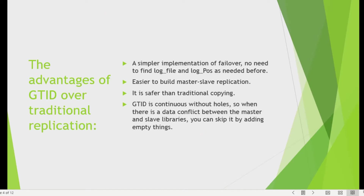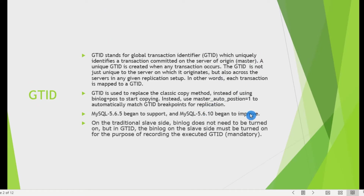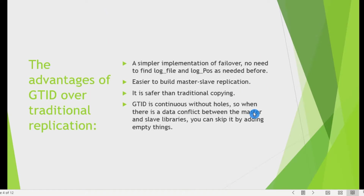The advantages of GTID over traditional replication include simpler failover. If the master fails and you have several slaves, you don't need to find the binary log file and position. Simply set master_auto_position=1 and replication starts automatically. It is also safer than traditional copying — GTID replication is continuous, and when there is a data conflict between master and slave you can skip it by injecting an empty transaction.